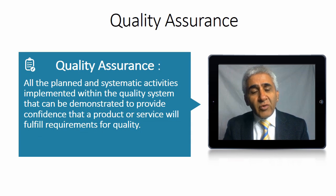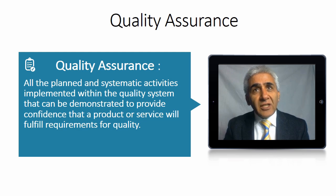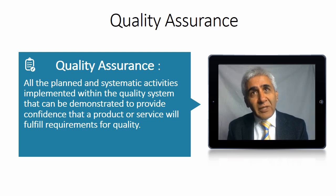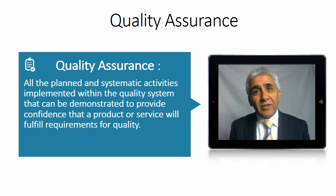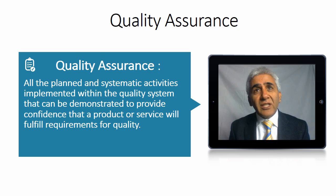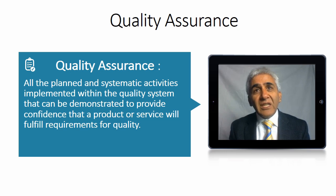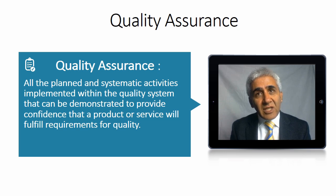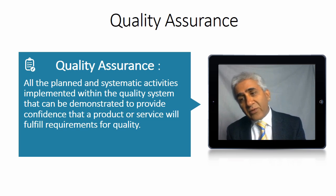Quality assurance is a set of planned and systematic activities which are done to provide confidence to the client and to management that the product will work, or that the services being provided are of good quality. These are planned and done beforehand, before production or service starts. They are more of a preventive measure rather than inspecting and then acting on that — QA comes first, and quality control comes at a later stage.